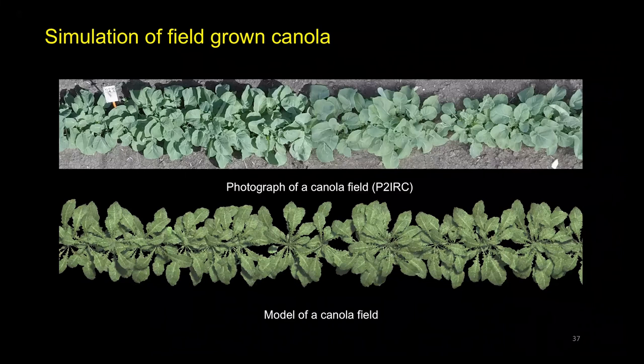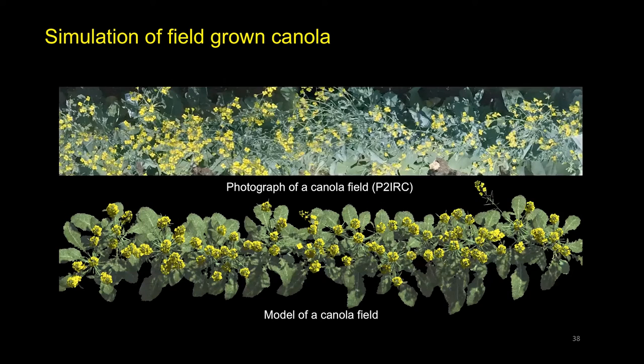So far, this presentation has focused on isolated plants. The model can also be used to simulate field-grown canola from early stages of growth to later stages. However, simulating many plants growing together requires including different aspects controlling the plant's development. For example, with collisions ignored, the leaves and branches will grow through each other.